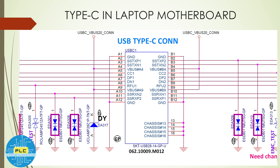In any motherboard schematic, the Type-C connector shows many A and B pins, which confuses many people. The reason is simple — A1 to A12 and B1 to B12 both appear in the schematic. If you connect one side, data-plus and data-minus work on that side and not the other; if you connect it the opposite way (ulta), data-plus and data-minus work on the other side.